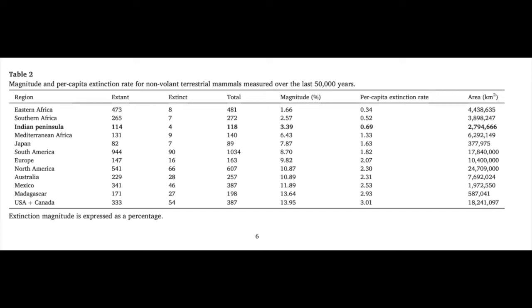The extinction per capita figure for the Indian subcontinent is 0.69. For Africa, the figure is 0.34 to 0.52. But when it comes to places like South America, Europe, North America, and Australia, the figures are way in excess — more than one, two, three, even up to about four. So if zero extinction equals zero on the scale, India is approaching about one but less than one. We actually have very low rates of extinction in India and in parts of Southern and Eastern Africa, while you get much higher rates of extinction in the Americas and in Australia.